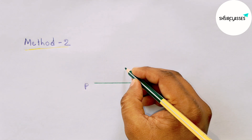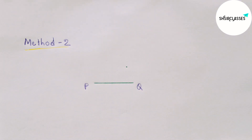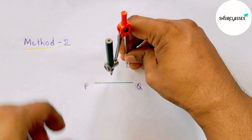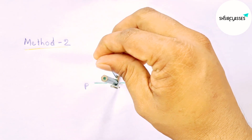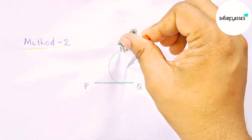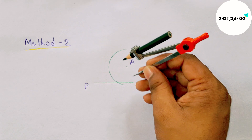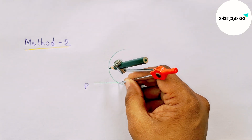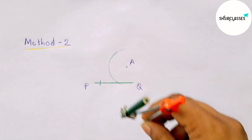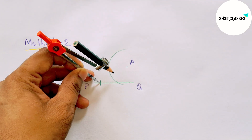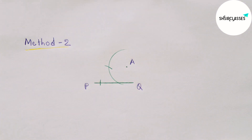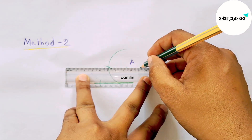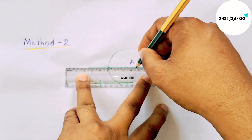Taking an external point to line PQ and labeling it A. Putting the compass on point A and taking any length, drawing an arc which meets line segment PQ at a point. Taking the same length, putting the compass and cutting line PQ, then again with the same length cutting. Joining to get a parallel line.